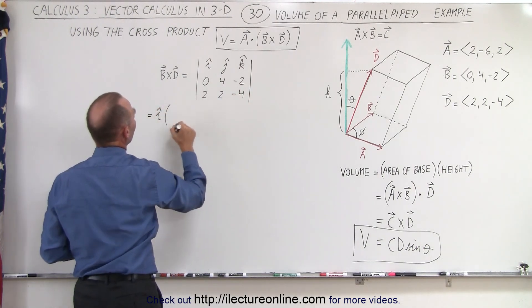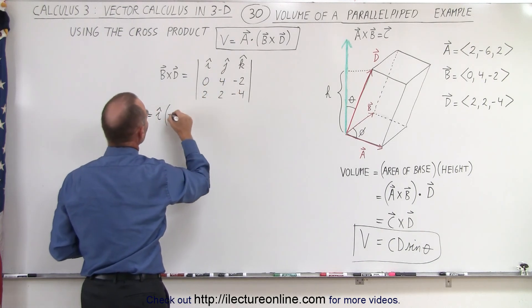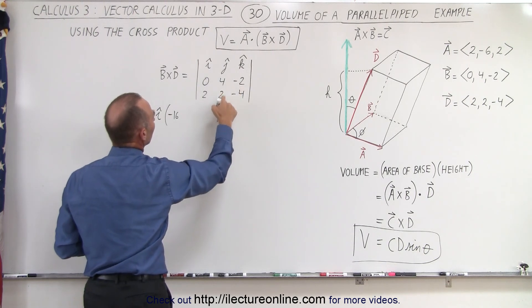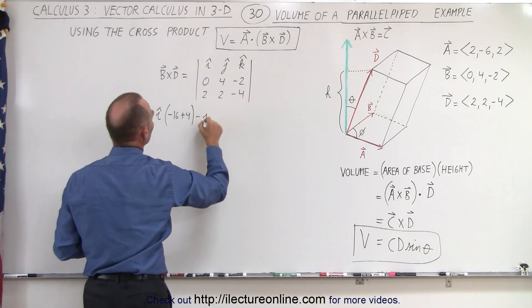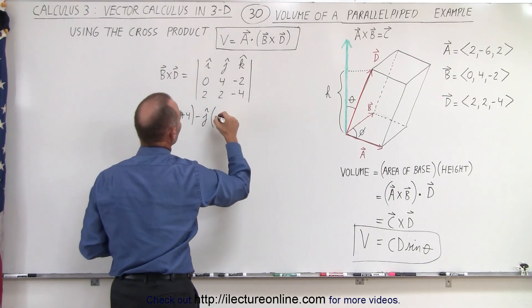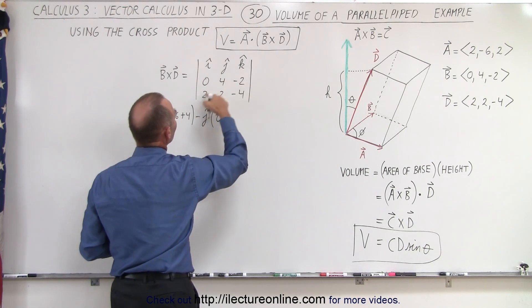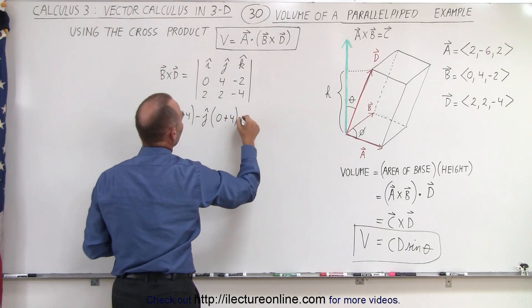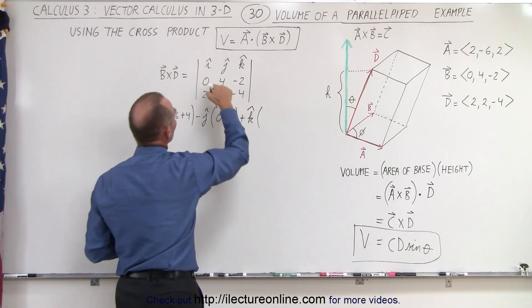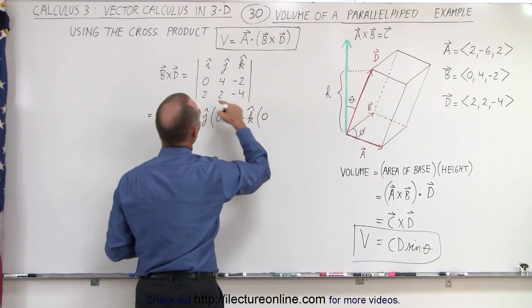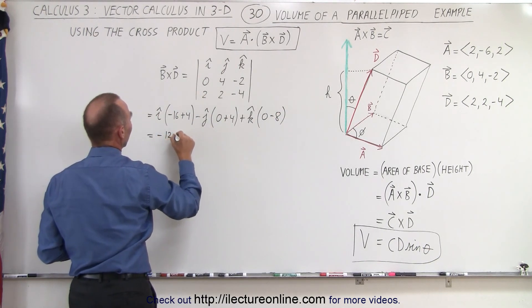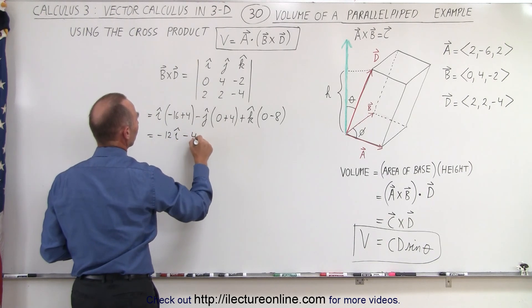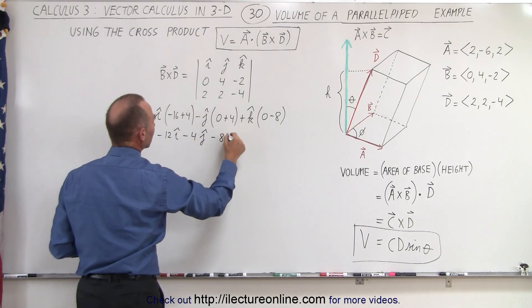So this is equal to i times 4 times negative 4, which is negative 16, minus a minus 2 times 4, that would be a minus 4 times a minus, that's a plus 4. And then plus K times 0 times 2, which is 0, minus 2 times 4, which is minus 8. So here we get a minus 12i, minus 4j, and minus 8k.